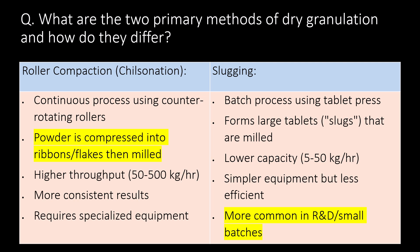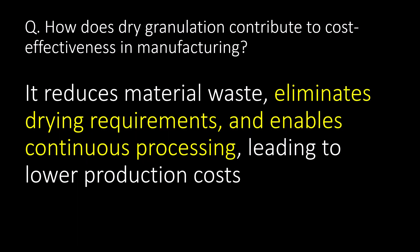What are the two primary methods of dry granulation and how do they differ? You can refer to the table below to differentiate between roller compaction (chilsonation) and the slugging method. Regarding cost effectiveness: dry granulation reduces material waste, eliminates drying requirements, and enables continuous processing, leading to lower production costs.